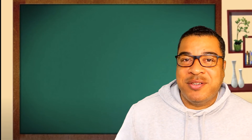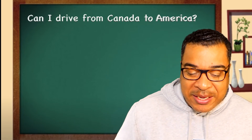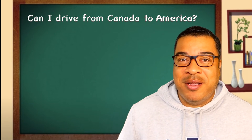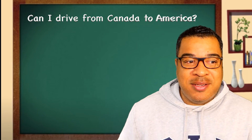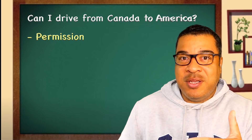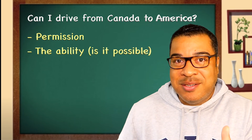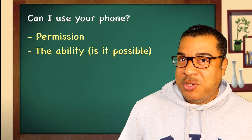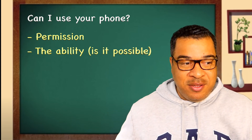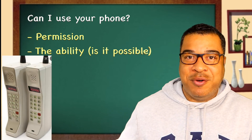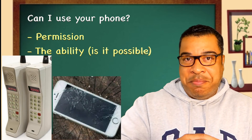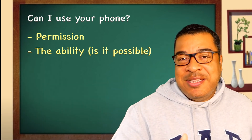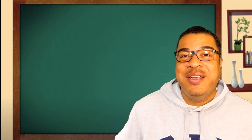Let's take a look at a couple more examples. 'Can I drive from Canada to America?' — am I asking permission, or am I talking about the ability to do it? Or how about, 'Can I use your phone?' — is that asking permission or asking about ability? Maybe your phone's screen is broken or the battery is about to die. If I say 'can I,' this is actually asking about ability.